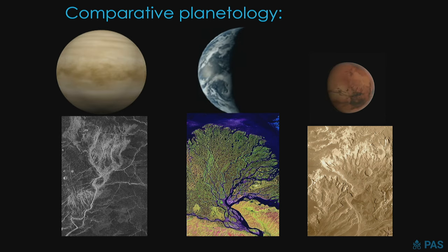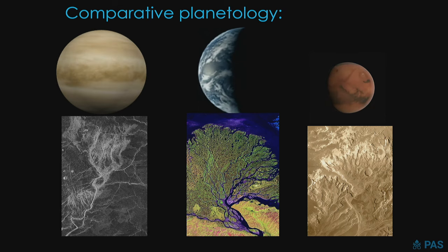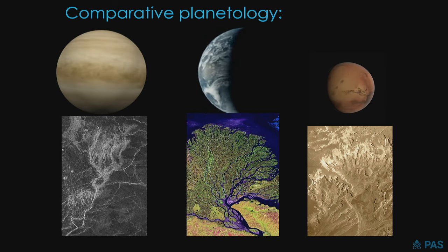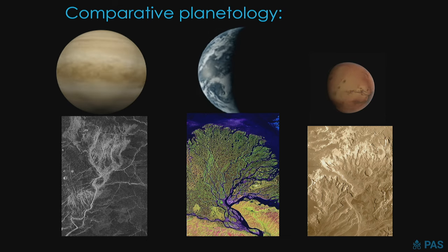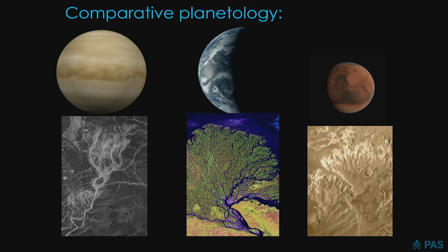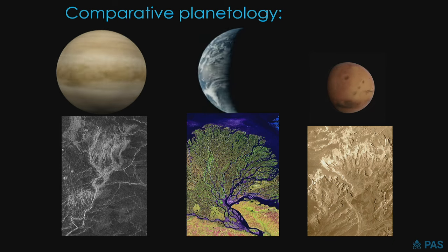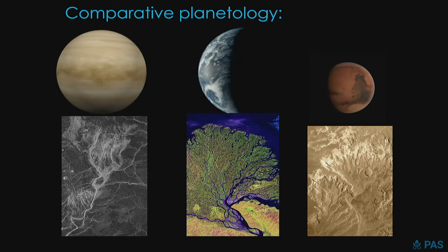In these river deltas on three different planets, you can see the obvious commonality, and yet the differences tell us stories about the different histories of these planets. On the left, the delta on Venus was carved not by water but by flowing volcanic lava — it's way too hot there. On the lower right, the delta on Mars was left by an ancient river flowing into an ancient lake, which has not flowed in billions of years. And in the center on Earth, we see a delta on a planet with an active hydrological cycle and the pervasive influence of life.